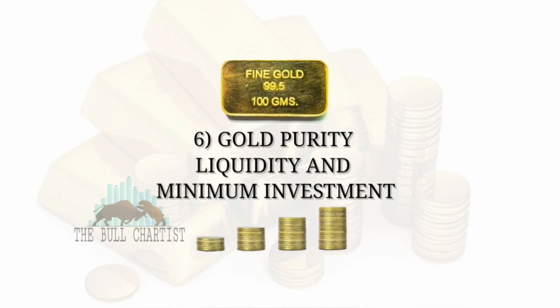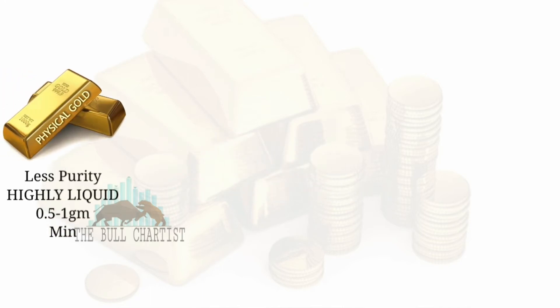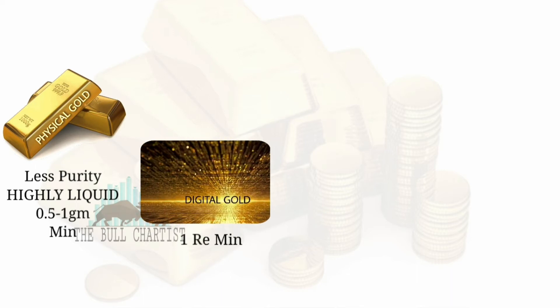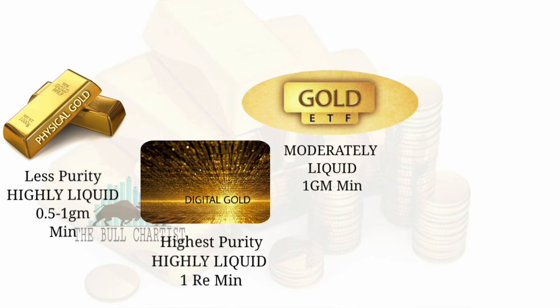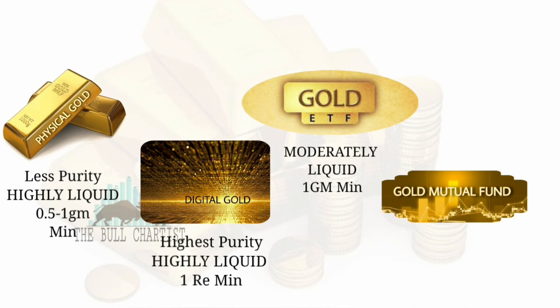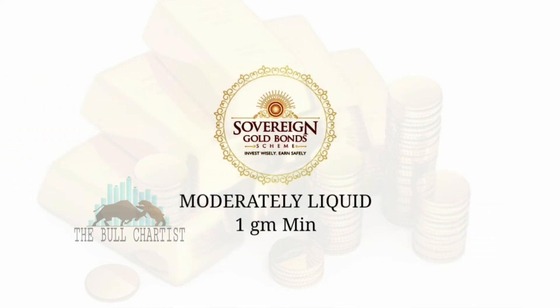Gold purity, liquidity, and minimum investment: Physical gold is less pure, highly liquid, and requires a minimum of 0.5–1 gram. Digital gold has high purity, is highly liquid, and requires a minimum investment of just 1 rupee. Gold ETF has moderate liquidity with a 1 gram minimum investment. Gold Mutual Fund is highly liquid with a minimum of 500 rupees. Sovereign Gold Bond is moderately liquid with a 1 gram minimum investment.